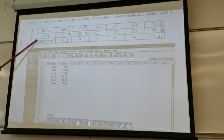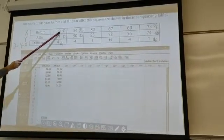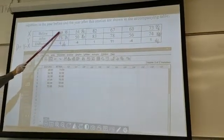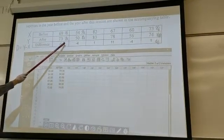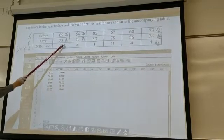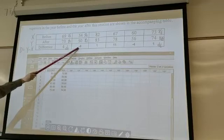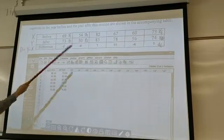Okay, let's look at the given data set. x1, y1, and d1. x1 is 69, y1 is 73, d1 is 4, and x2 is 54, y2 is 50, d2 is minus 4, and so on and so forth.